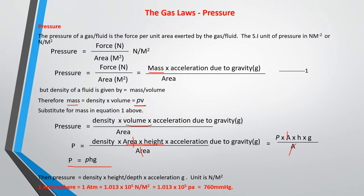The final equation is therefore: pressure equals density times height times acceleration due to gravity, written as P = ρgh. This is another formula for pressure. Depending on the variables given, you can use either P = F/A or P = ρgh to find pressure. Height here refers to height or depth, and the unit is still Newton per meter squared.